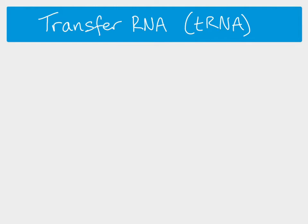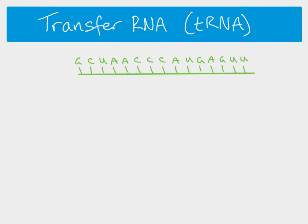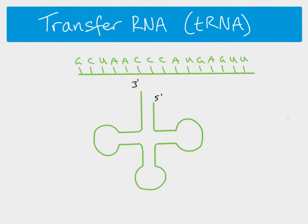The transfer RNA molecule, like any other RNA molecule, is a single-stranded length of RNA. It contains uracil instead of thymine, just as messenger RNA does. Although it is a single strand, it is folded to form a particular shape. Starting from the three-prime end, it folds into loops, giving it a cloverleaf shape in two dimensions. In three dimensions, those loops fold across each other into more of an L-shape.